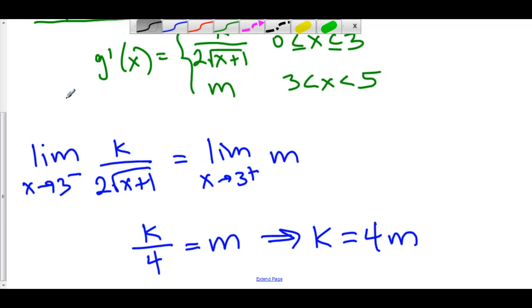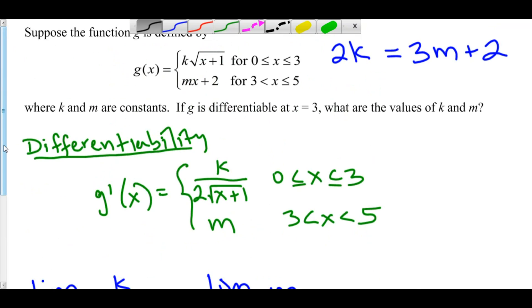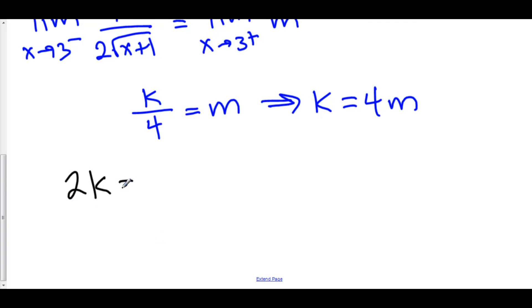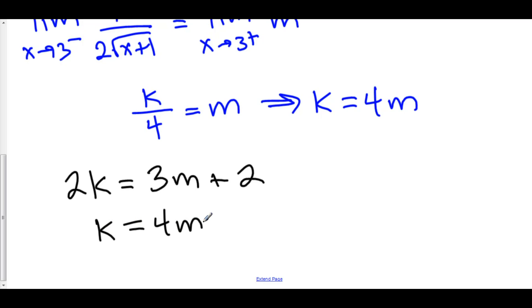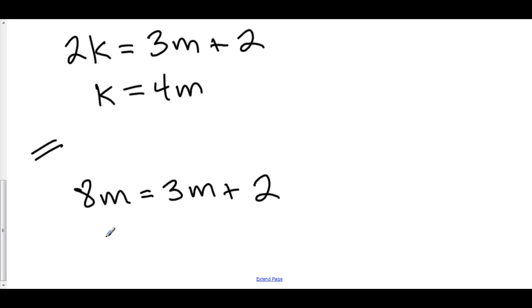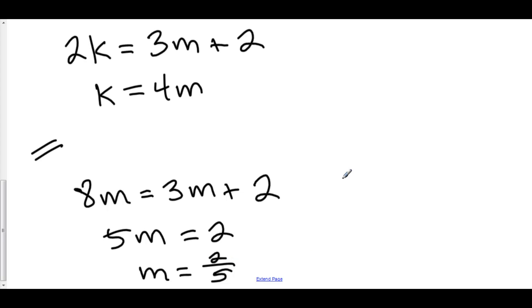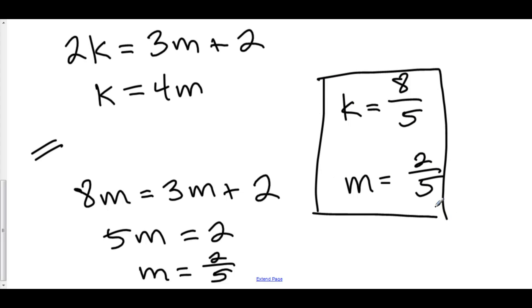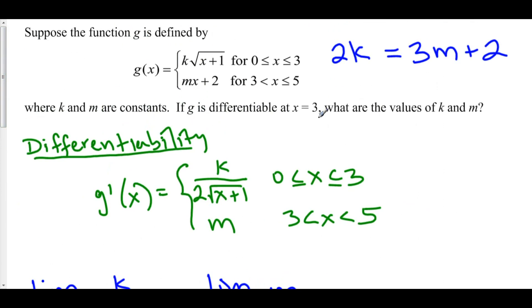We now have two relations: from continuity, 2k equals 3m plus 2, and from differentiability, k equals 4m. Using substitution, plug 4m in for k: 2 times 4m gives 8m, so 8m equals 3m plus 2. Subtracting, we get 5m equals 2, which implies m equals 2 over 5. Since k equals 4m, k equals 4 times 2 over 5, which is 8 over 5. So k equals 8 over 5 and m equals 2 over 5. These are the constants that make g differentiable at x equals 3.